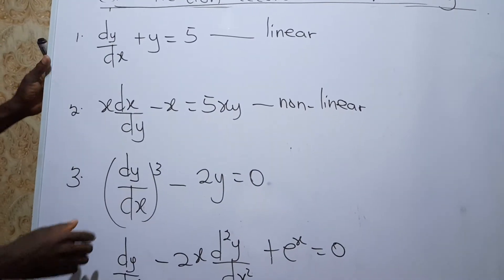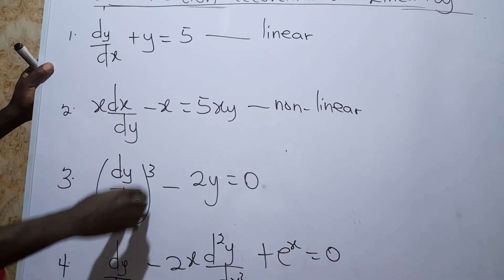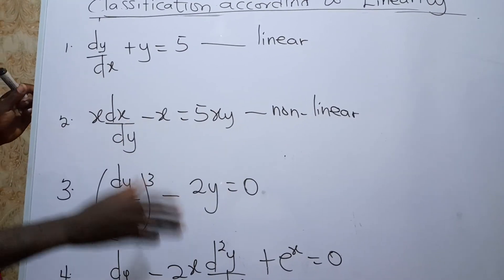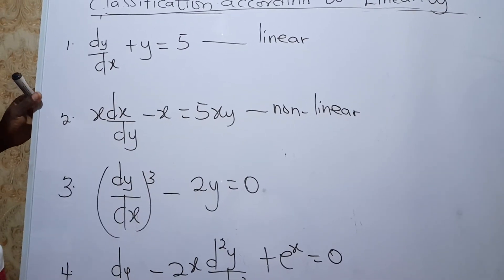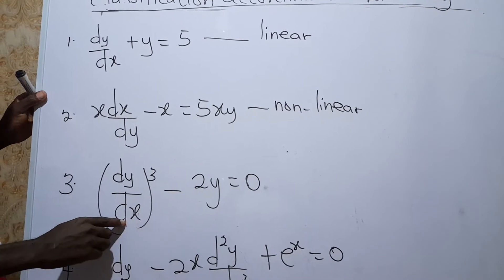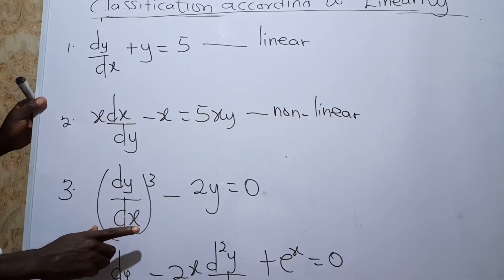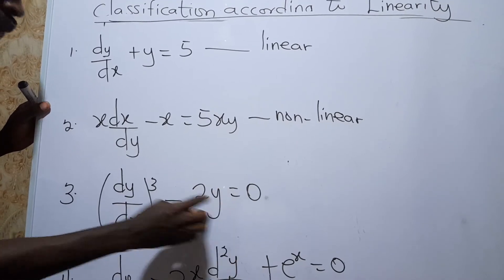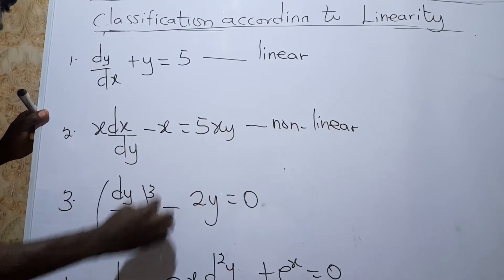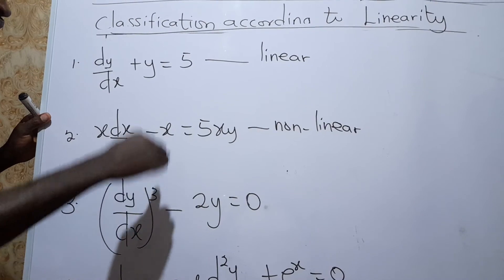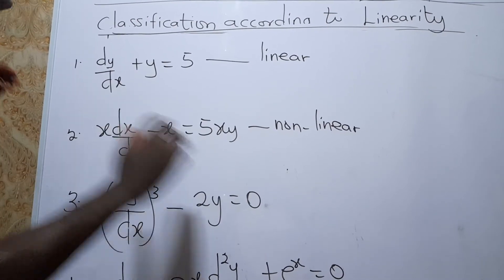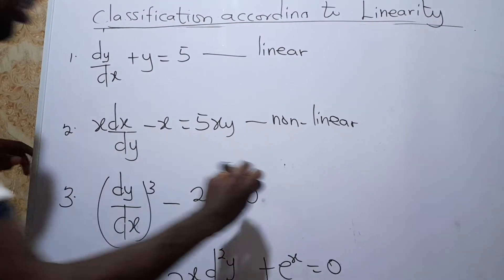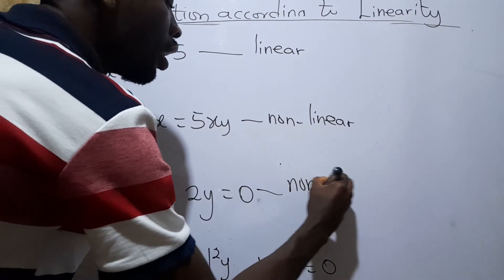For the third equation, the dependent variable is y. There is a dependent variable with degree 1, but there is a derivative whose degree is not 1 — the degree is 3. That alone disqualifies this differential equation from being linear. So we say it is non-linear.